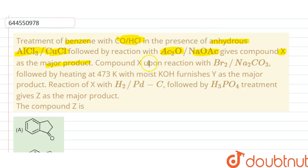As the major product, compound X upon reaction with Br2/Na2CO3 followed by heating at 473 Kelvin with moist potassium hydroxide gives Y as the major product.